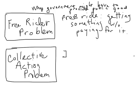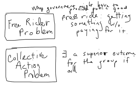This collective action problem happens when there exists a superior outcome for the group if all can agree to it. For example, if we could limit fishers in a commonly accessible fishery, everybody's better off — we have a sustainable catch over time. But everybody has an individual private incentive, and without some extra agreement, everybody would end up overusing the good if left to their own private incentives.